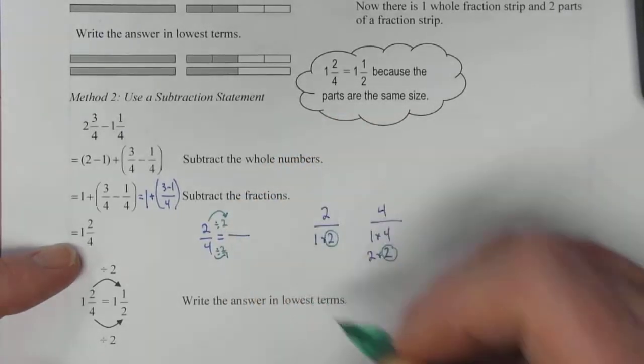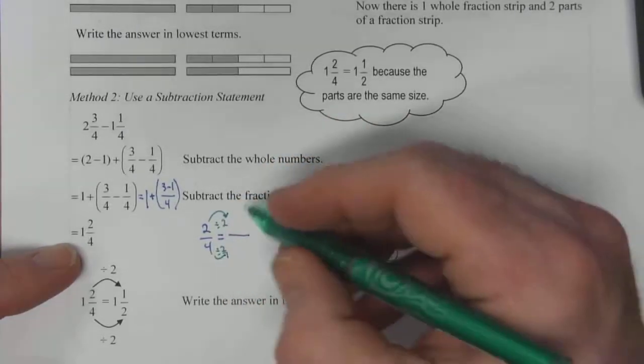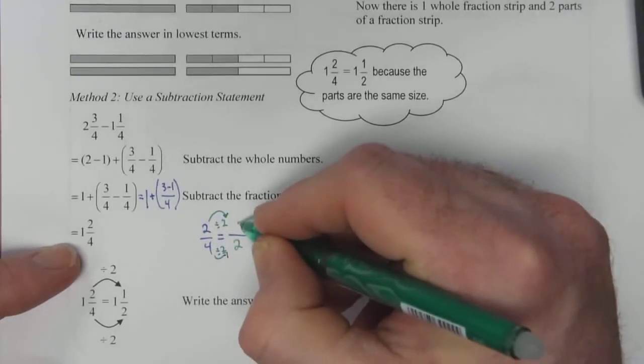What you do to the bottom you have to do to the top. So four divided by two becomes two. Two divided by two becomes one.